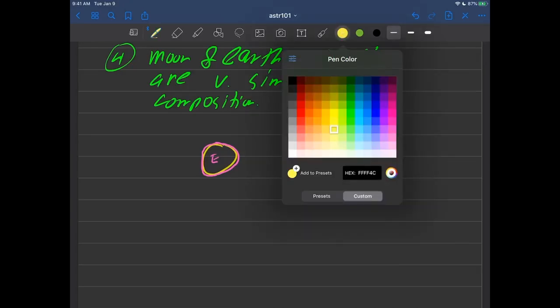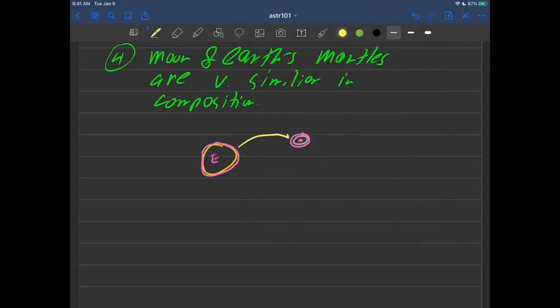So what that means then is that in this theory here, that these outer regions here, these are the mantles and those are very similar in composition. Okay, so the outer surfaces are very similar in rock composition. So if you grab a rock from the surface of the earth, or a rock from the surface of the moon, they're gonna be very similar.